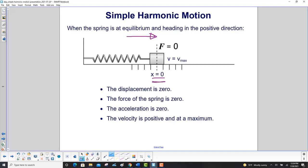The mass was let go and the spring pushed it in this direction. Here's the equilibrium point. At the equilibrium point, the displacement is zero. The force of the spring is zero because F equals minus kx, x is zero. The acceleration at this point is zero. Why? Because the force is zero. And good old Newton's law, force is zero, no acceleration. The velocity is positive and is at a maximum.